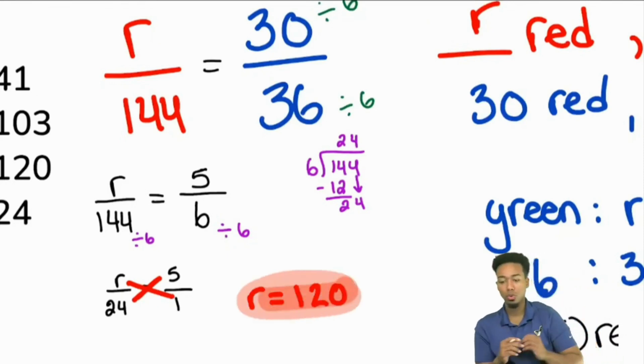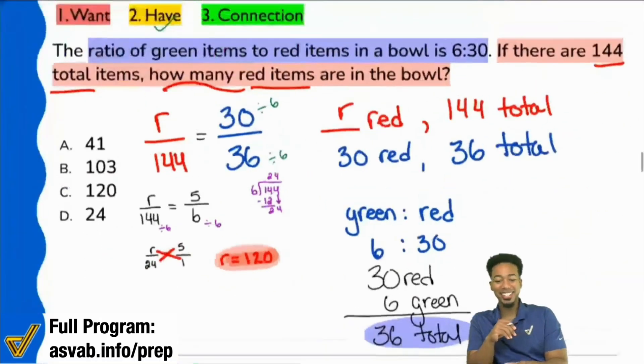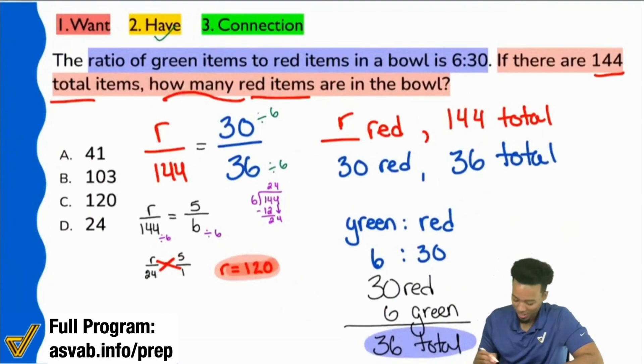And there you are. Joel, what happened? What happened? But yeah, the answer there would be 120, and that is C.